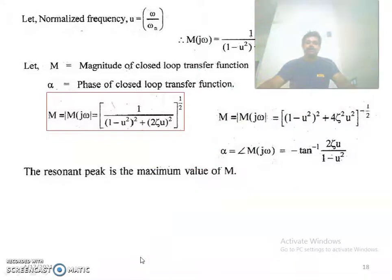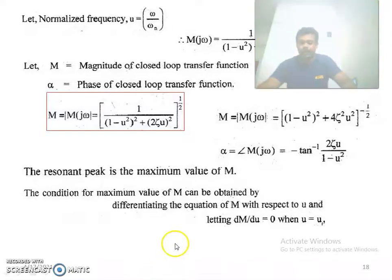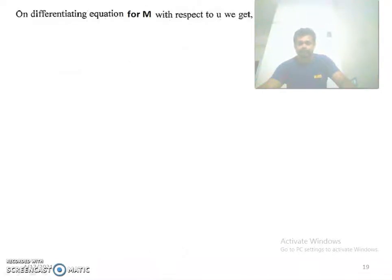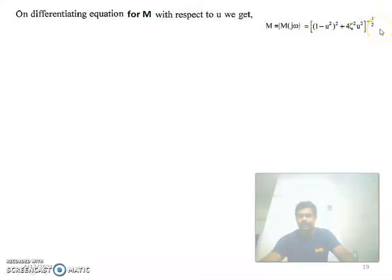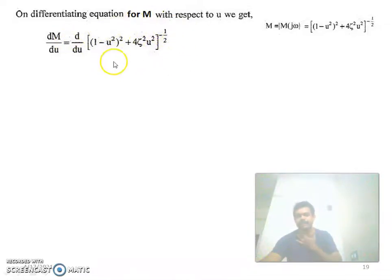The resonant peak is the maximum value of M. The condition for maximum M is obtained by differentiating M with respect to u and setting dM/du = 0 when u = ur, where ur is the normalized resonant frequency (ur = ωr/ωn). We differentiate M = [(1 - u²)² + 4ζ²u²]^(-1/2) using the chain rule, treating the bracket as x^n.